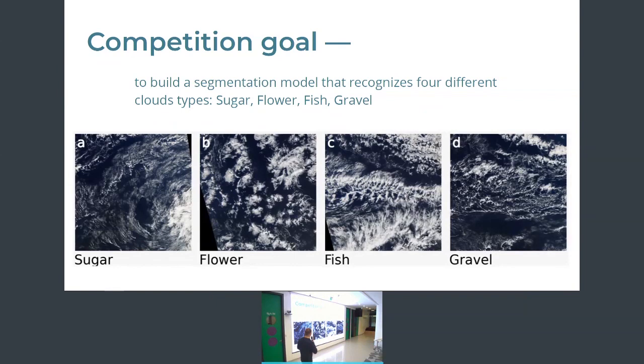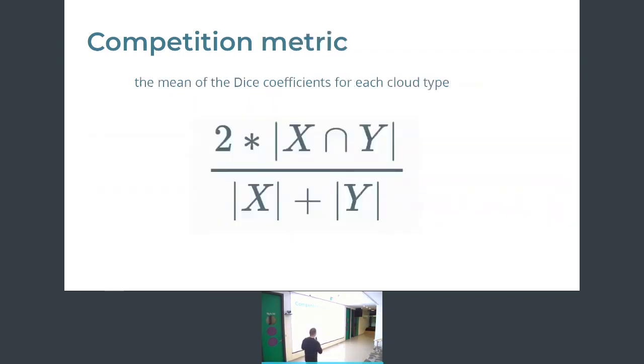So the main goal is to build a segmentation model which will recognize different cloud types. You can see the four main cloud types and they named them sugar, flower, fish, and gravel. They are changing a little. You can see that it has a different structure and it's not so easy for a human to detect it. Of course it will take some time, but it's easier to train some algorithm which will predict results without any trouble. And the main competition metric is a dice coefficient which calculates how much we predict right from everything we're predicting.